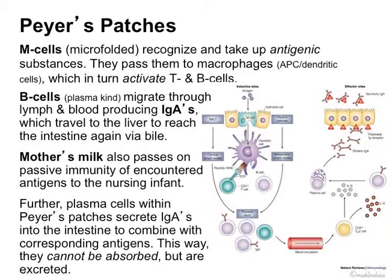These Peyer's patches are organized and have different cells in them. They have M cells, which recognize an antigen and take it up — or eat that antigenic substance. Then they pass those along to macrophages, which become antigen presenting cells or dendritic cells, as we call them from the immune system. These activated macrophages, these APC cells, then activate the T cells — the T helpers — and then the T helpers activate the B cells.